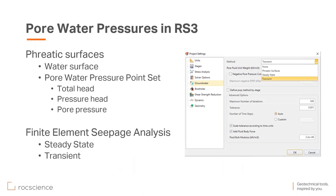We have different methods in RS3 to establish the pore water pressure distribution in the domain. The simple option is the phreatic surface — you define the water surface, and pore water pressure is calculated based on the coordinates of nodes with respect to that surface. Another option is the pore water pressure point set, where you define coordinates and assign total head, pressure head, or pore water pressure at each point, then use interpolation and extrapolation. The most advanced method is our finite element seepage analysis, available for both steady state and transient conditions.